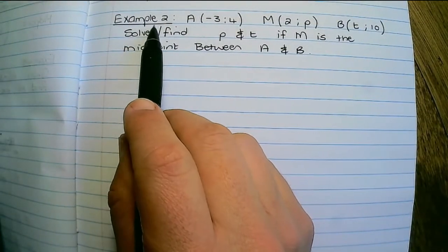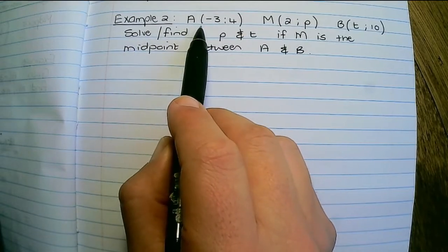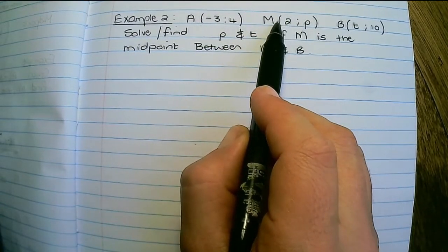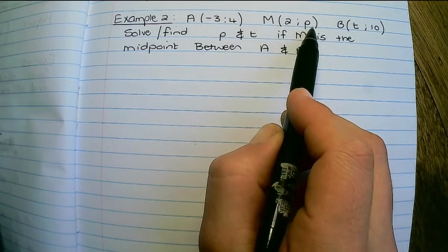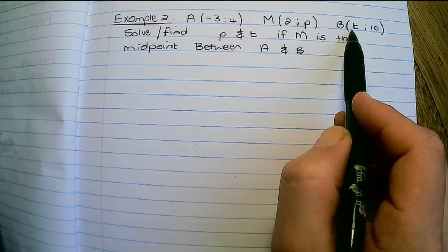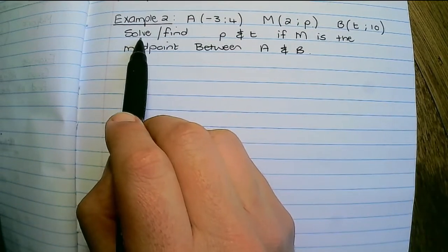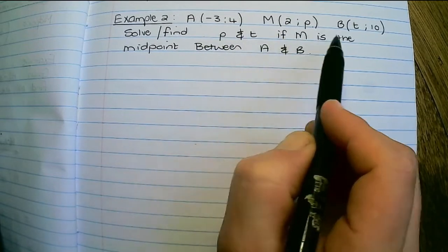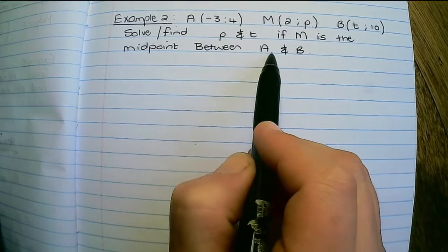In this example we are given the coordinates A, M, and B, but notice M has a y coordinate of P and B has an x coordinate of T. Then the question is solve or find P and T if M is the midpoint between A and B.